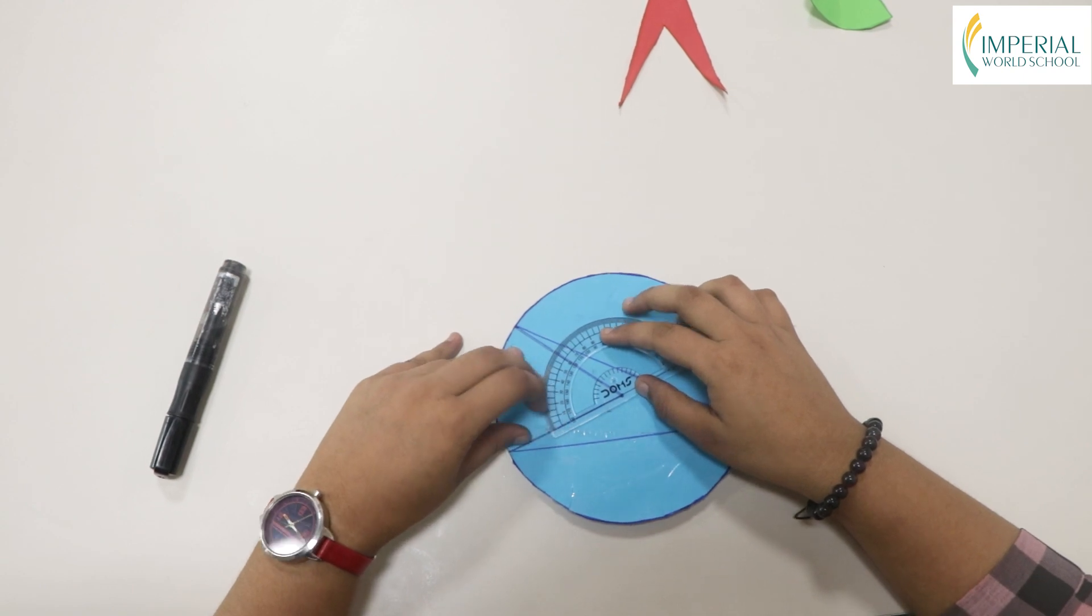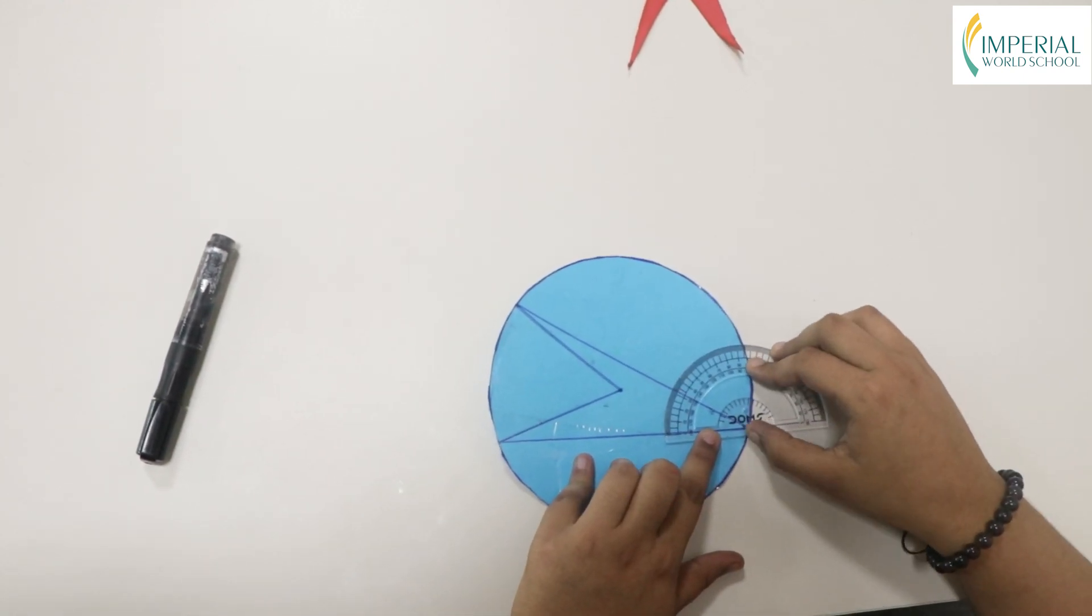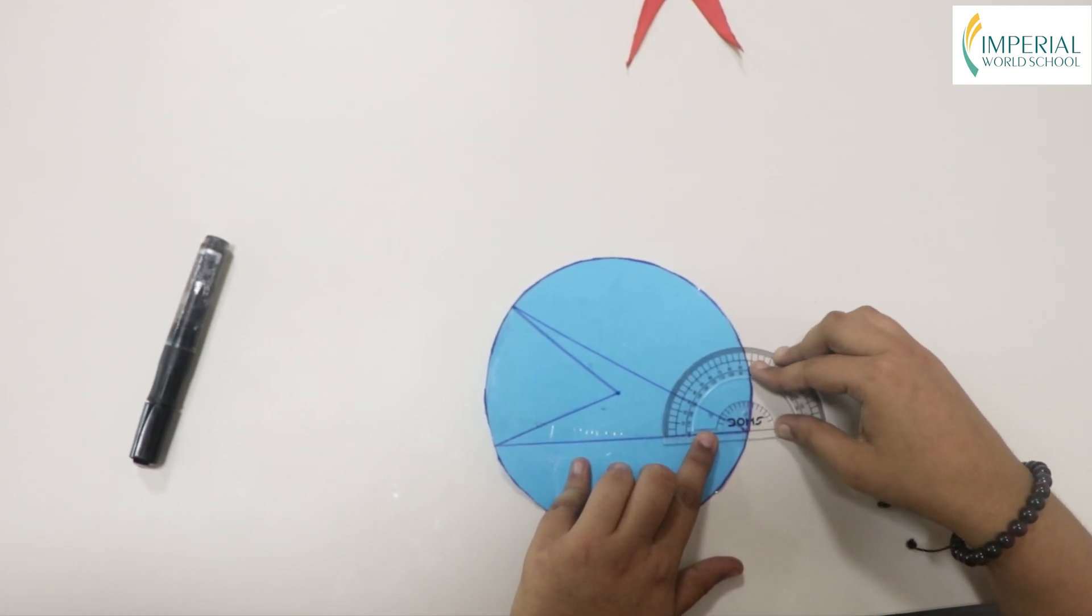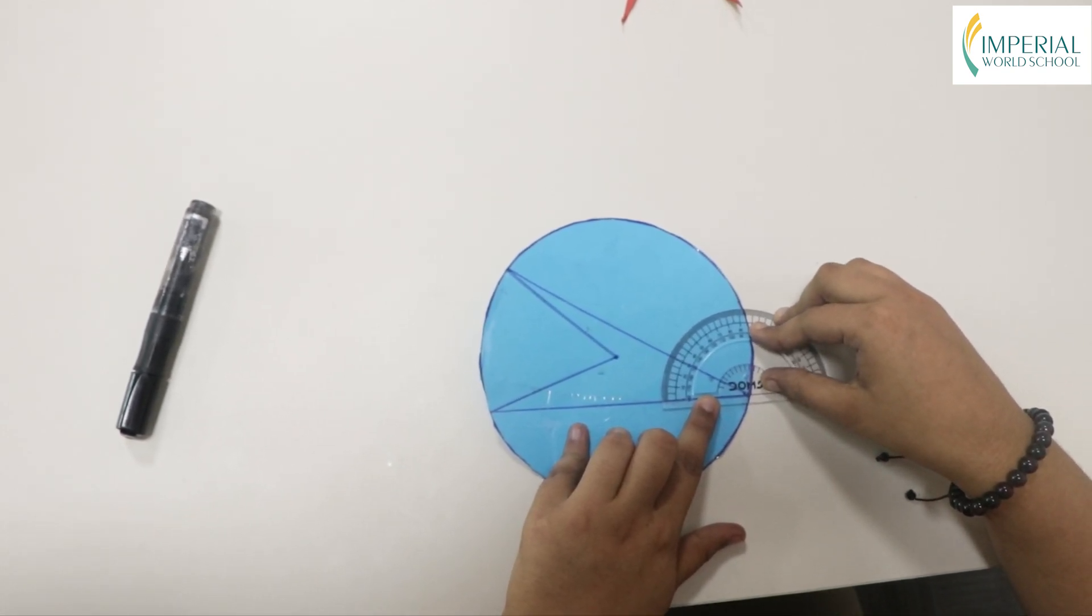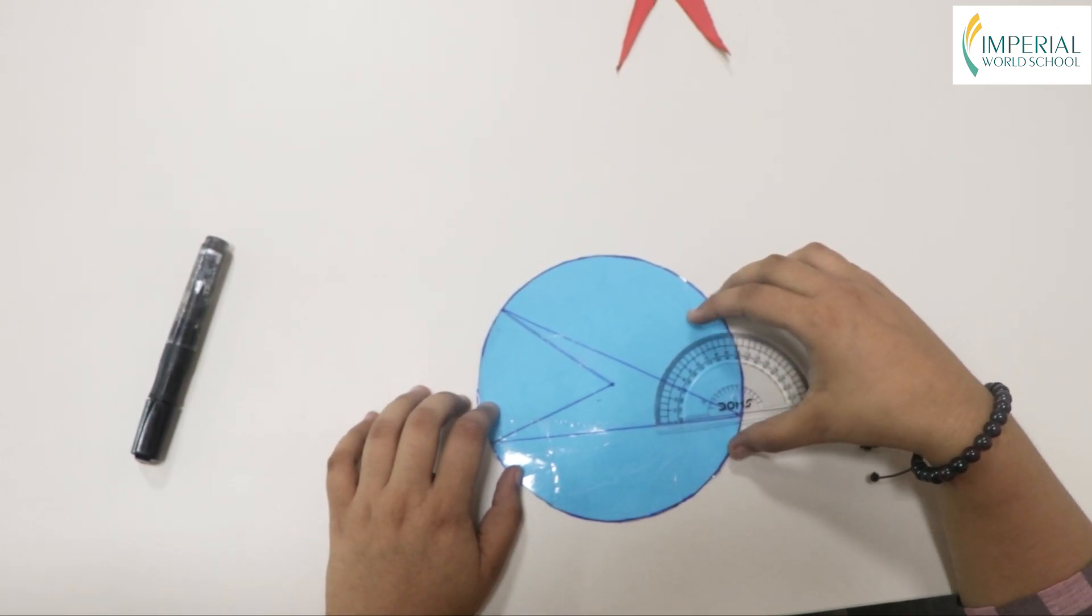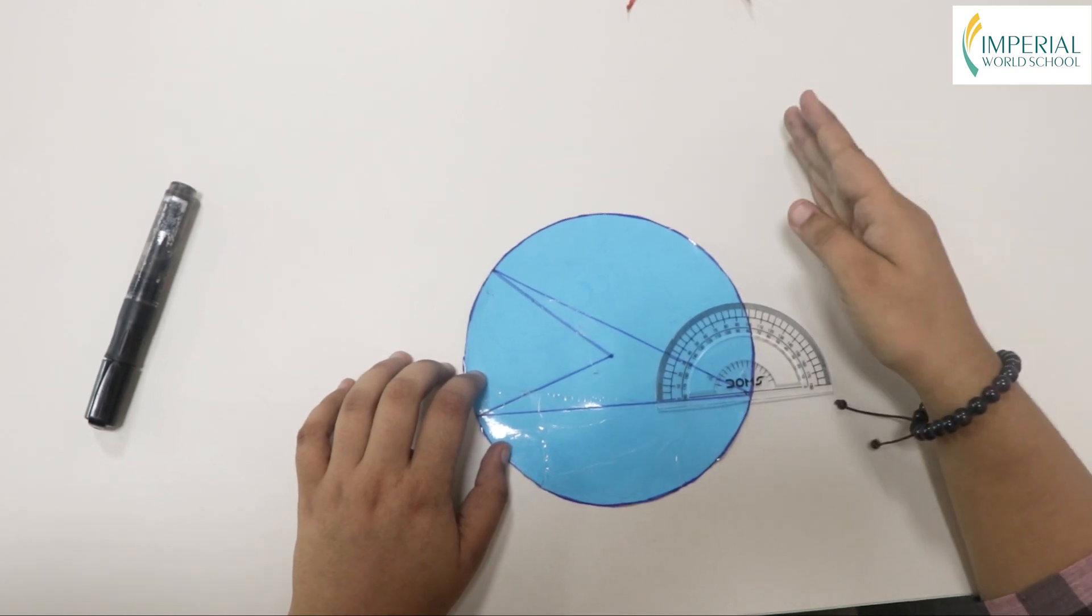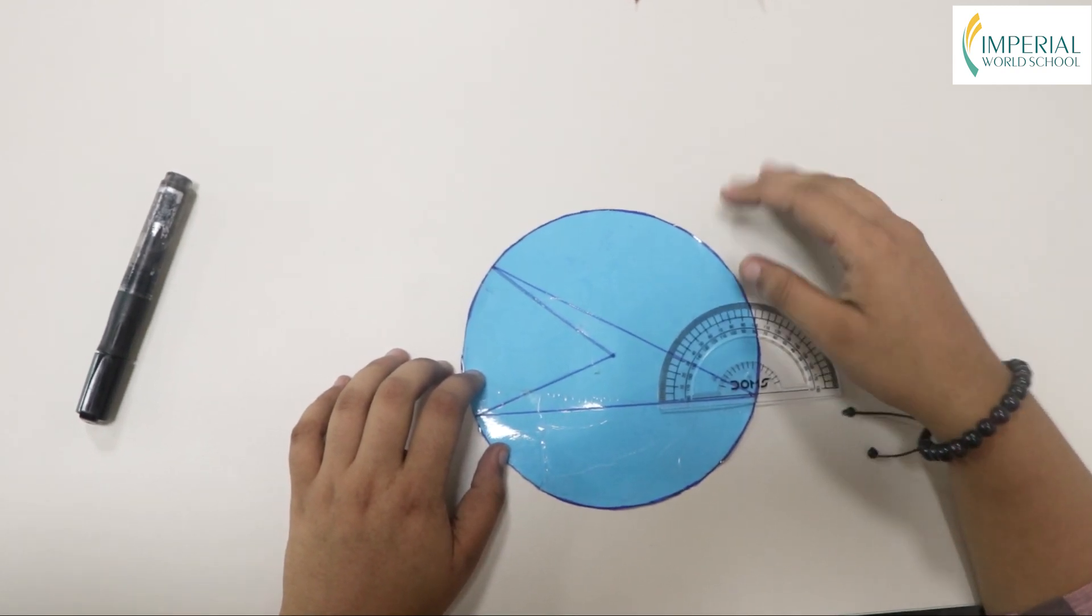And if we measure the inscribed angle, we can see that it is 30 degrees. 60 degrees is double 30 degrees, or 30 degrees is half of 60 degrees. So this proves that the central angle is double the inscribed angle.